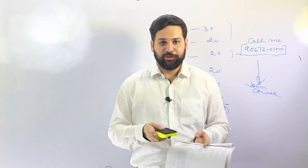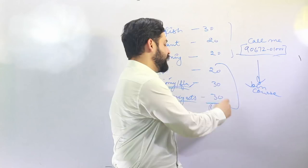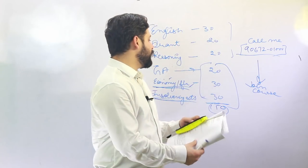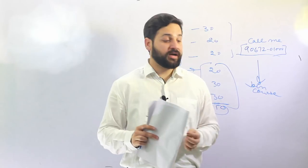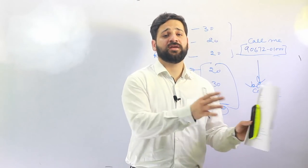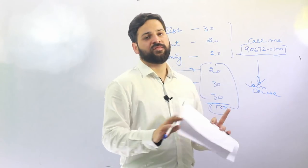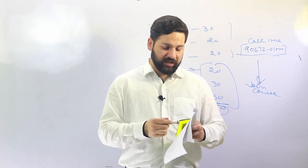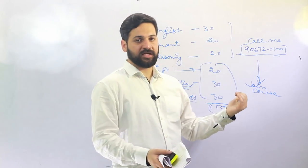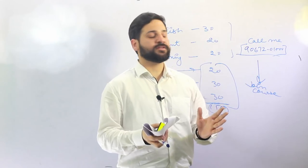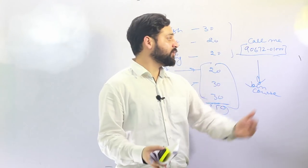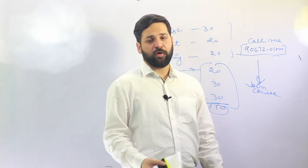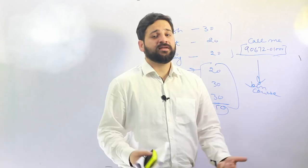The reason you are really here is to learn about the general awareness, economics and finance, and insolvency act sections. The general awareness section is similar to IBPS PO exams — divided into a static portion and current affairs. Reading current affairs for the last three to four months is sufficient. You also need to cover banking awareness. We are preparing study material for each section and conducting regular classes; details are available in the description. My personal number is 9067201000.